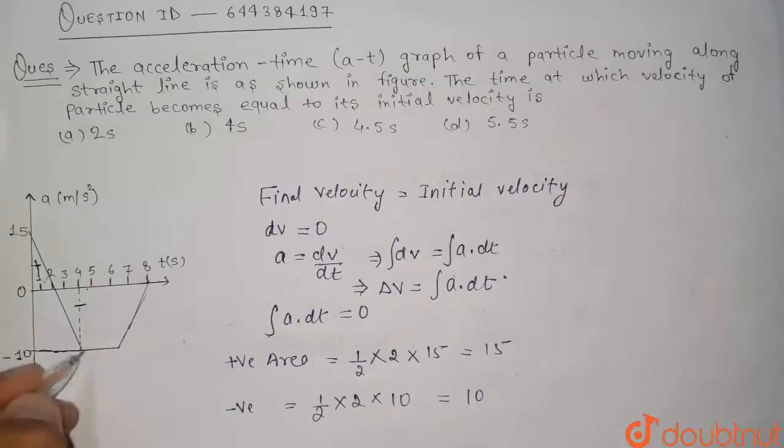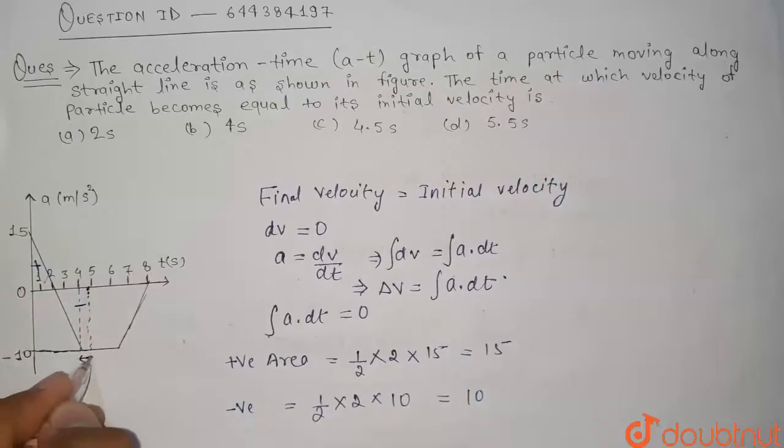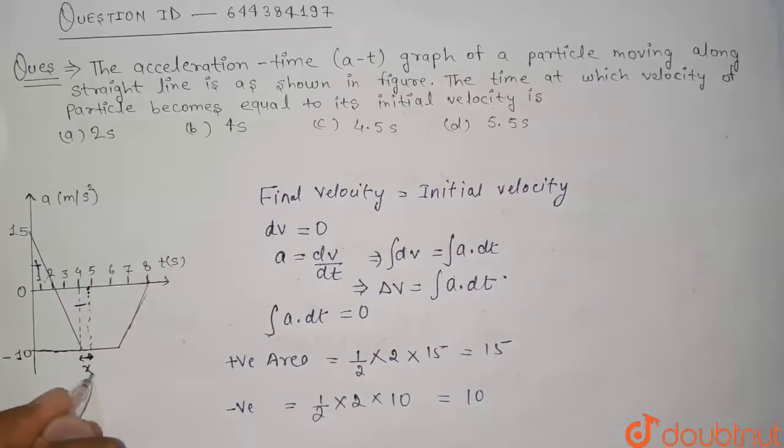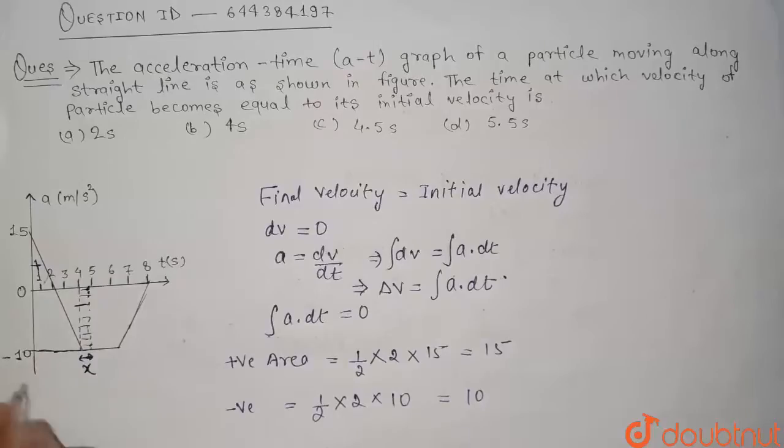So for taking 5 negative area more, let us assume that this is our time. Let us assume that this length or this change in time is x. So what is the area of this strip?